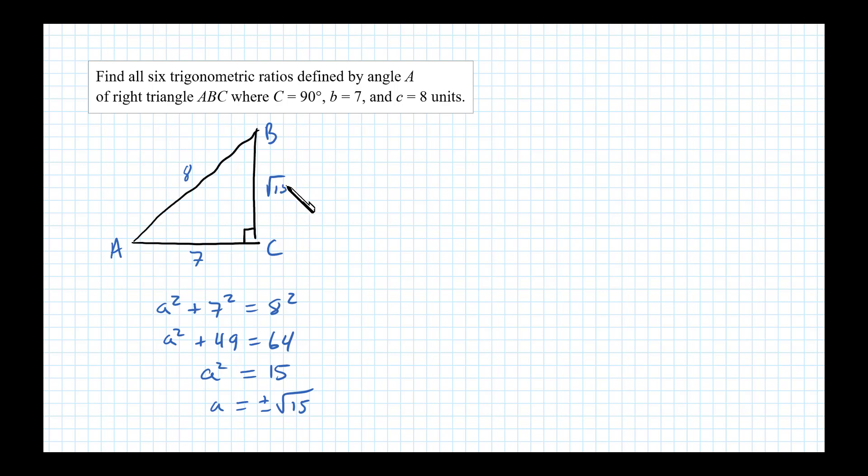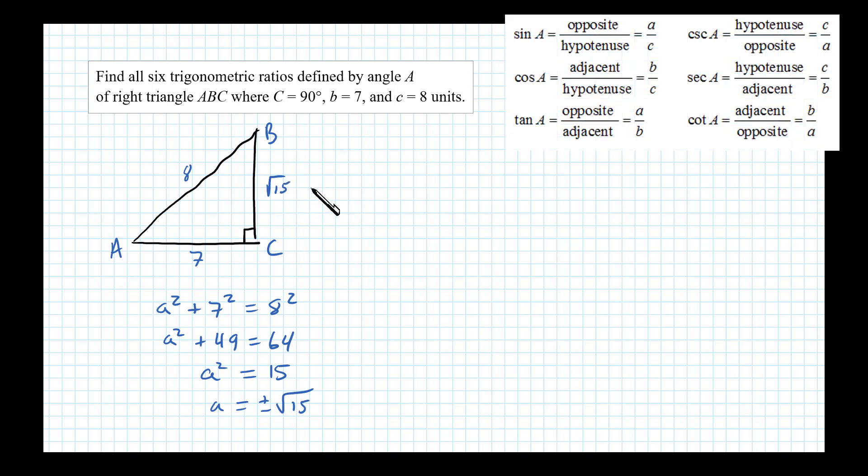Now with that, we can answer the question and get all six trigonometric ratios. Sine of A is defined to be the length of the side opposite angle A divided by the hypotenuse, so opposite over hypotenuse. We have square root of 15 over 8.